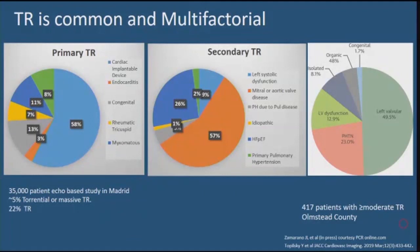The commonest cause of primary tricuspid regurgitation in this era is actually due to implantable device leads, and for secondary tricuspid regurgitation it remains due to left-sided valvular heart disease. Closer to home, the Olmstead County study looked at echocardiograms spanning about 10 years and found about 417 patients had at least moderate tricuspid regurgitation. In that cohort, the commonest cause was left-sided valvular heart disease, followed by pulmonary hypertension.